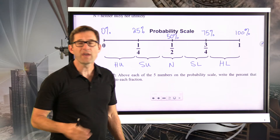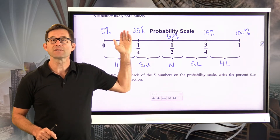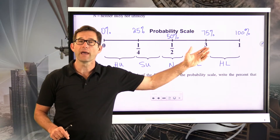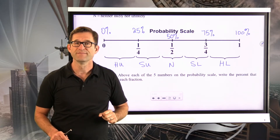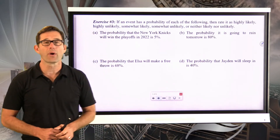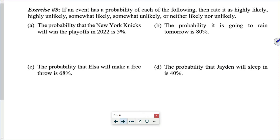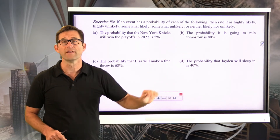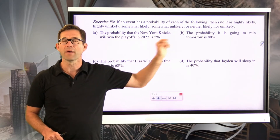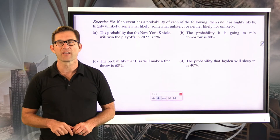We can now think about probabilities in terms of percent. A probability of one-fourth is the same as twenty-five percent, and a probability of three-fourths is the same as seventy-five percent. Exercise three: if an event has a probability of each of the following, rate it as highly likely, highly unlikely, somewhat likely, somewhat unlikely, or neither likely nor unlikely. Pause the video now.